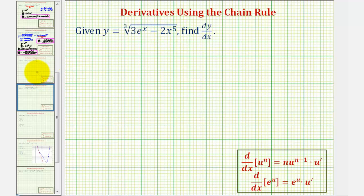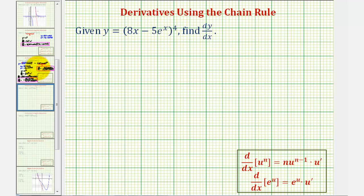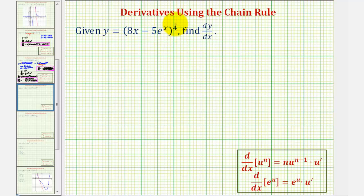Going back to our first example, the first thing we should recognize is that the given function is a composite function and therefore we have to apply the chain rule to find the derivative. This is a composite function because we have an inner function, which in this case would be 8x minus 5e to the x, and an outer function that raises the base to the fourth power.